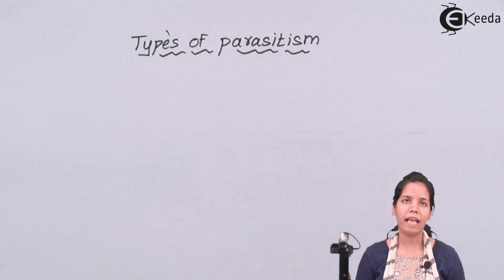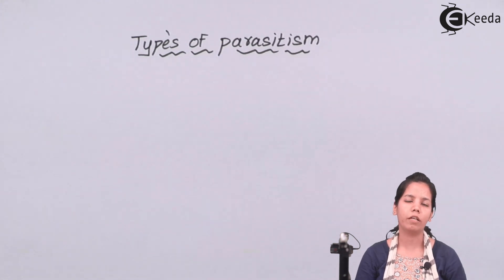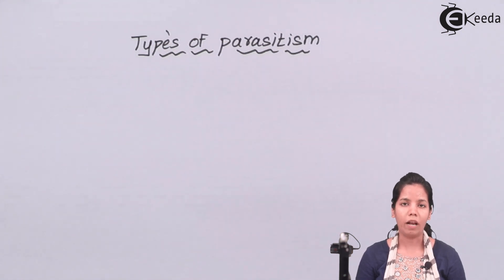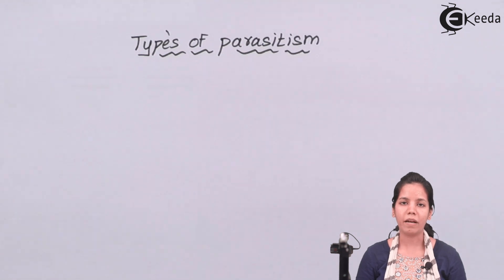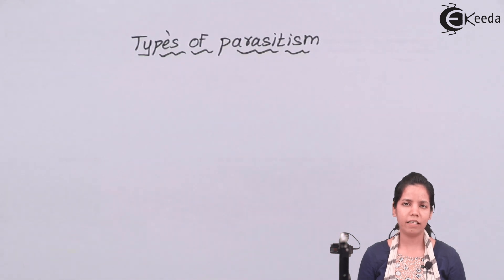When I say ectoparasitism, it means parasites which reside on the outer surface or outer body of organisms. Examples could be lice, ticks, and bugs. Lice reside in the hair of human beings, whereas ticks and bugs are present on the upper surface or upper fur of an animal, where they reside, gain shelter, and eat their food.